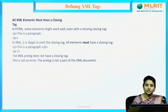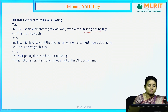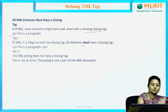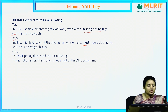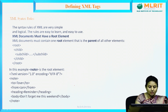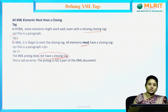All XML elements must have a closing tag. In HTML, some elements like p and br can work without a closing tag, but in XML it is illegal to omit the closing tag — all elements must have one. The exception is the XML prologue, which does not have a closing tag, and that is not an error because the prologue is not part of the XML document.